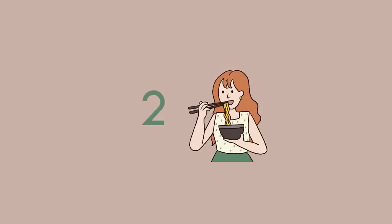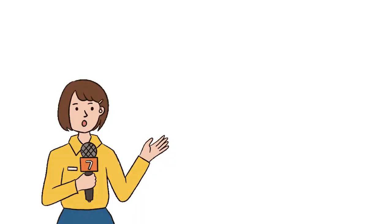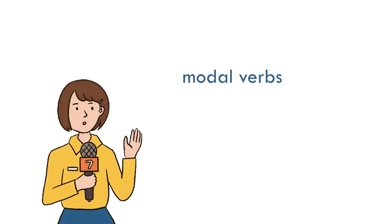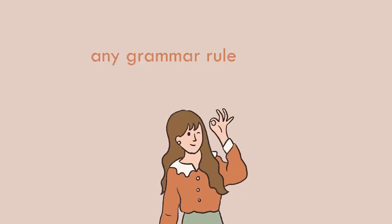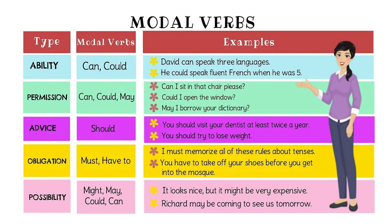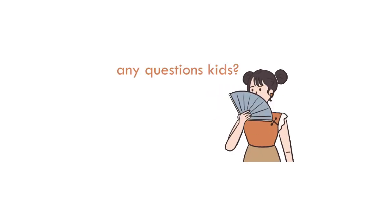Moving on to our second GG. This grammar activity is perfect to let students differentiate between modal verbs, or revise the verbs that should be followed by 'to' plus infinitive or gerund, or any other grammar lesson you find applicable. As you know, the meaning of some modal verbs or certain grammar structures can be tricky, especially in the negative forms. So I tried this activity with my students and they fully understood the lesson.